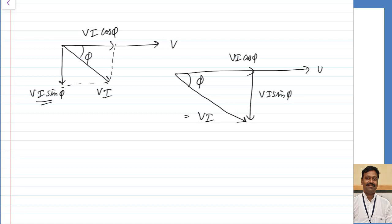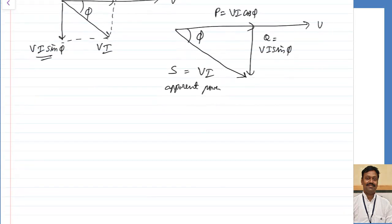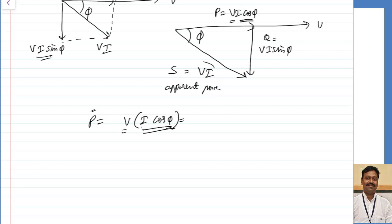This V·I is called the apparent power, V·I·sin φ is called the reactive power, and V·I·cos φ is the active power. We know that active power in any circuit — as derived in the case of the RL circuit — the active power equals V·I·cos φ. This is the current in phase with the voltage, which is responsible for the active power loss.